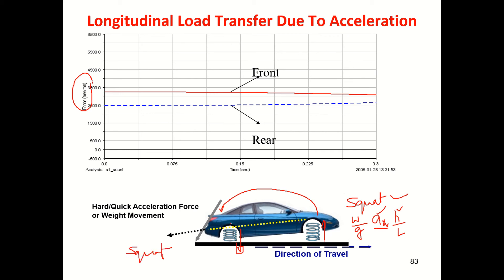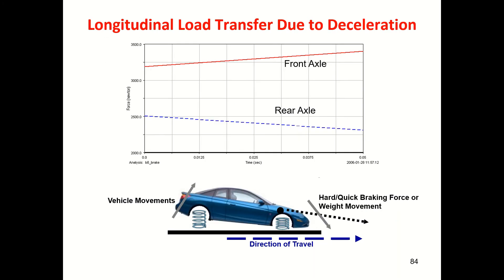That is why you are thrown backwards during hard acceleration. Now in the deceleration case, the load on the front is increasing as the acceleration magnitude increases, and the load on the rear decreases — load transfers from rear to front.